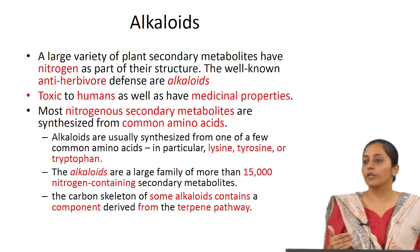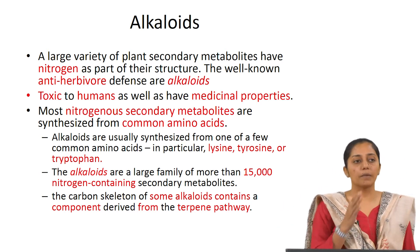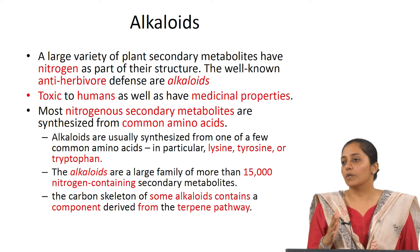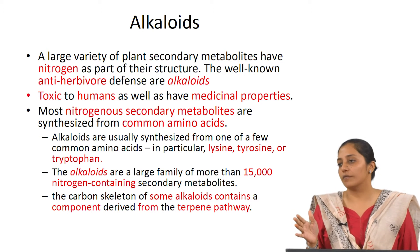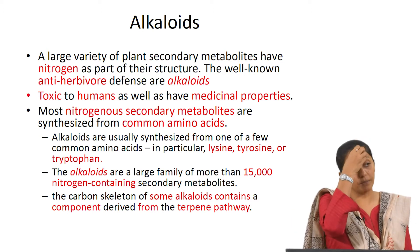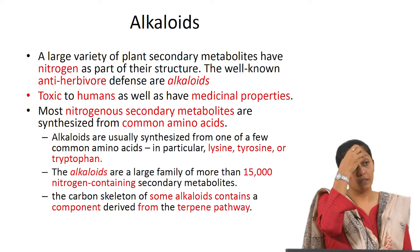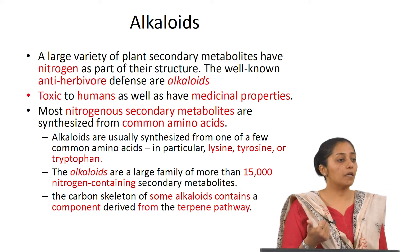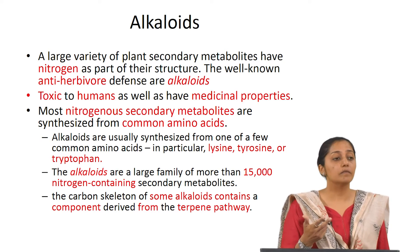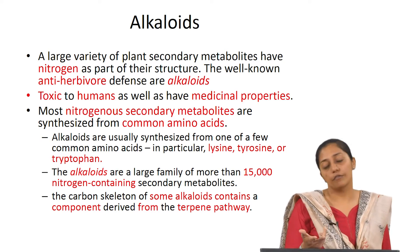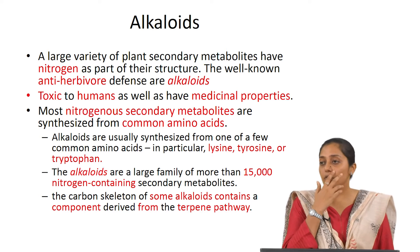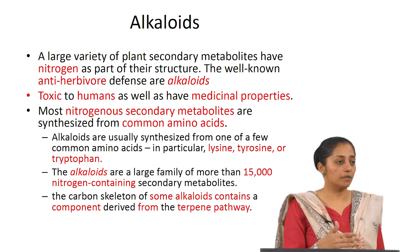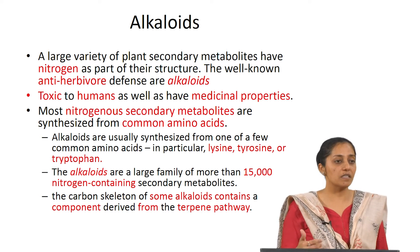We went on to see the major classes of secondary metabolites found in plants. The major classes are nitrogen-containing compounds, terpenes, and phenolics. We then studied these three classes in detail.